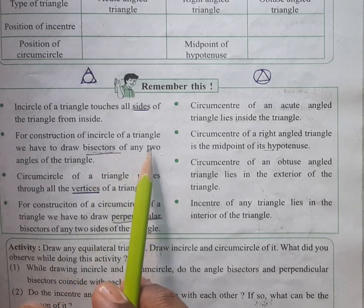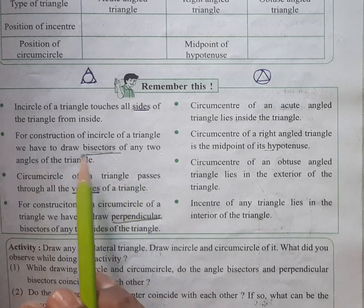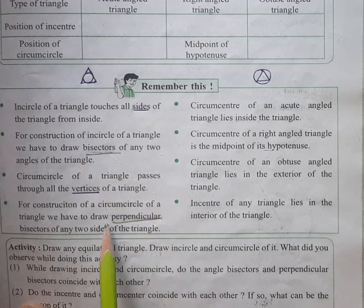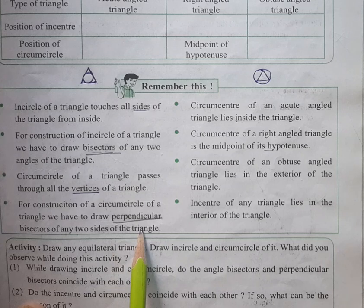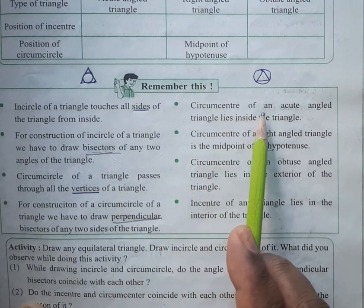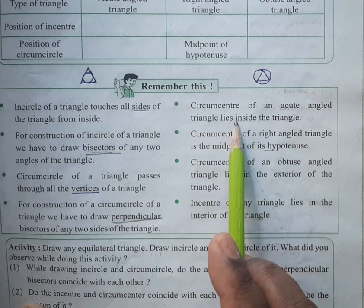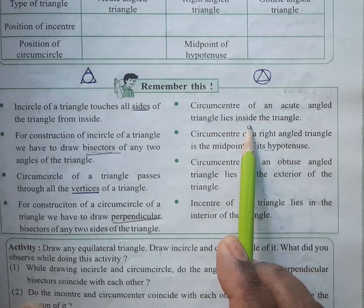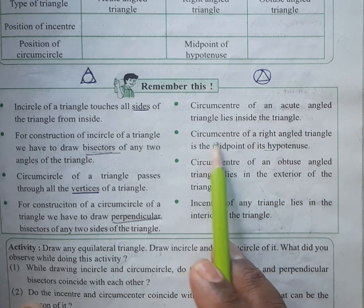So to summarize: for the incircle, draw the angle bisectors of any two angles; for the circumcircle, draw the perpendicular bisectors of any two sides of the triangle. The circumcenter of an acute angle triangle lies inside the triangle.